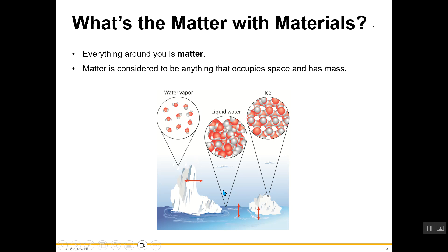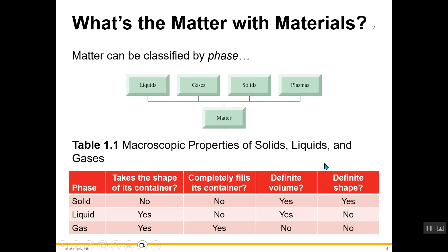As you probably learned from your previous science background in elementary, middle school, or even high school, matter can exist in three main states or phases. That is no less true for water. You can have water vapor, where water exists as a gas; water in a liquid state, which we're more familiar with; and water in a solid state, which is ice. This is pretty much true for any form of matter that exists in nature.